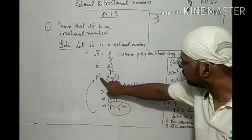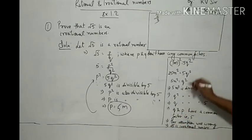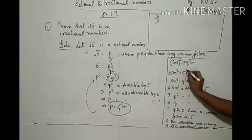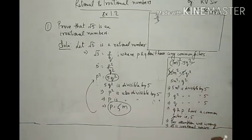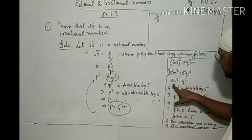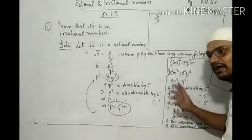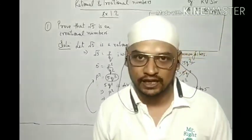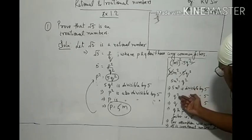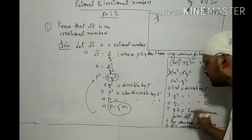Substituting p equals 5m, we get (5m)² equals 5q², which gives 25m² equals 5q². Cancelling, we get 5m² equals q². By the same logic, since 5m² is divisible by 5, q squared is also divisible by 5, which means q is also divisible by 5.